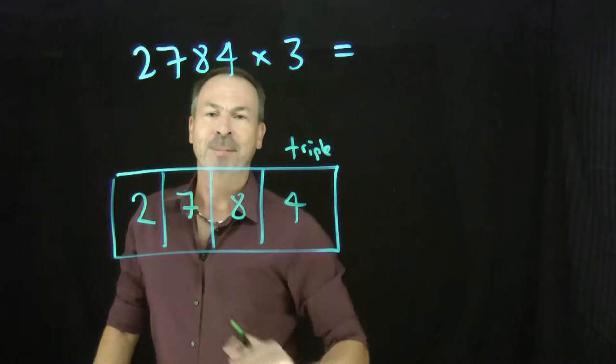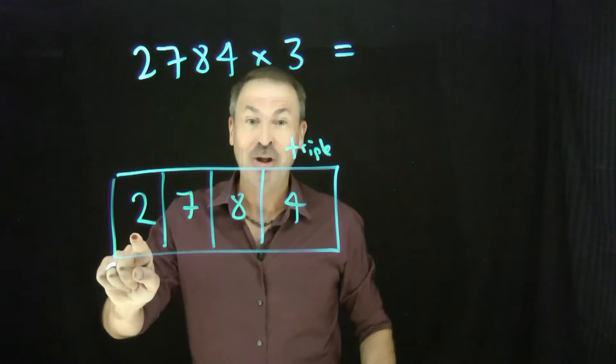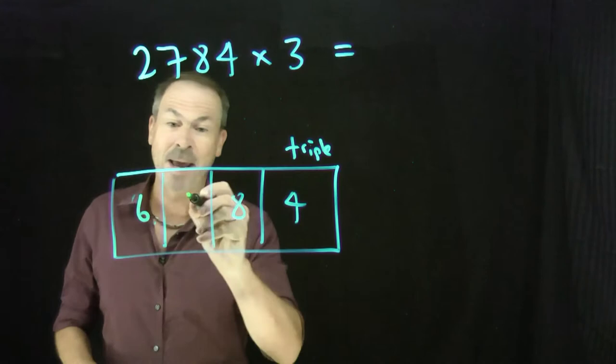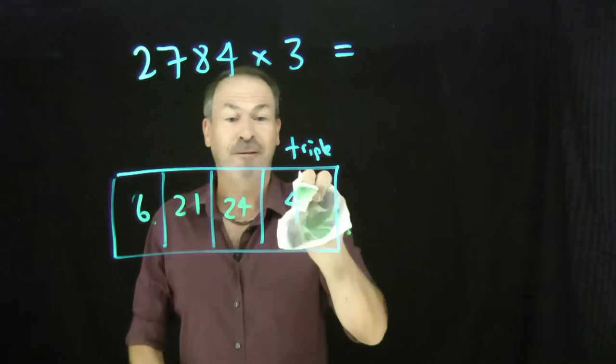Okay, common sense says if I'm going to be asked to triple everything, then I'll just triple everything. 2 thousands would become, triple that, 6 thousands. 7 hundreds tripled would make 21 hundreds. 8 tens tripled makes 24 tens, and 4 ones tripled would make 12 ones.